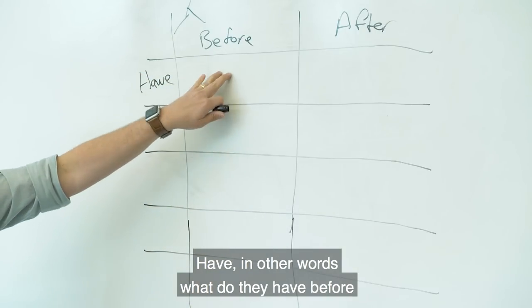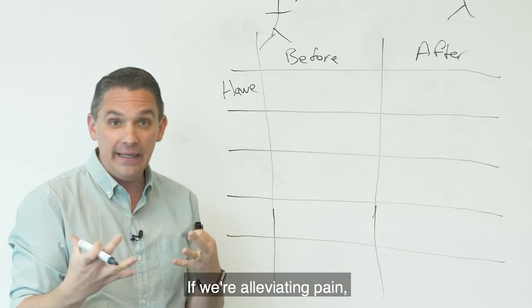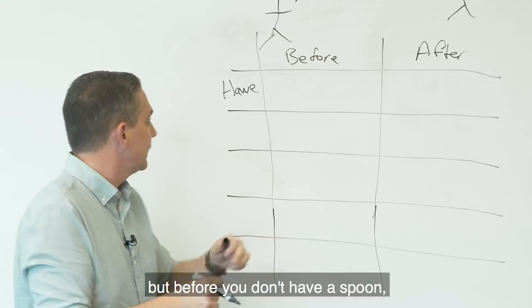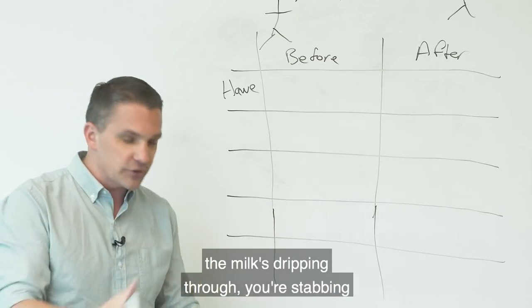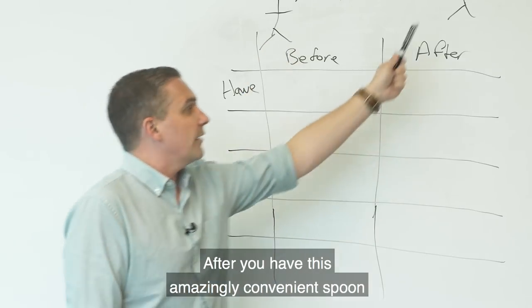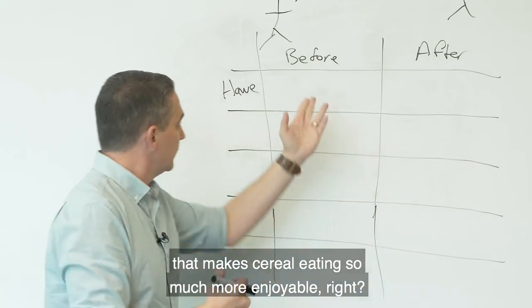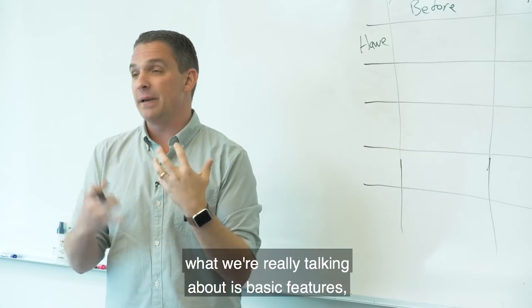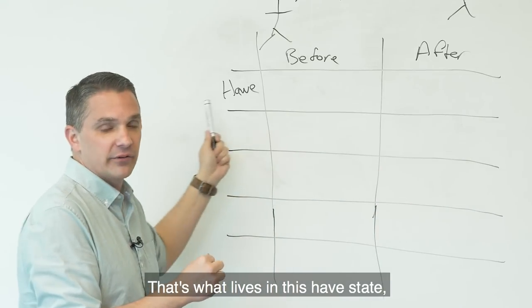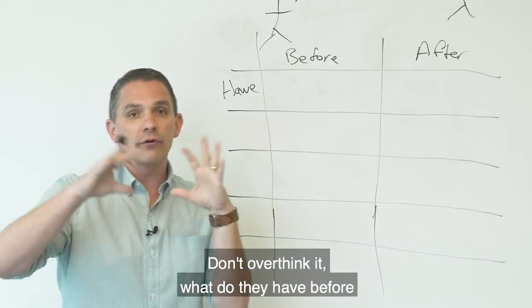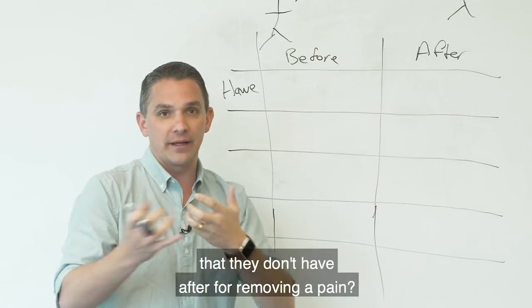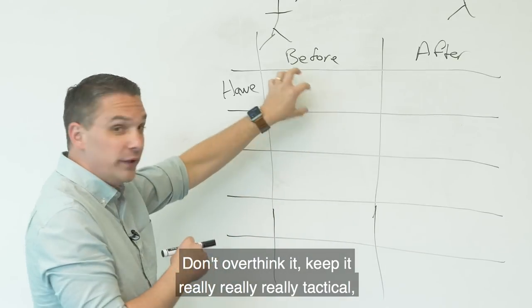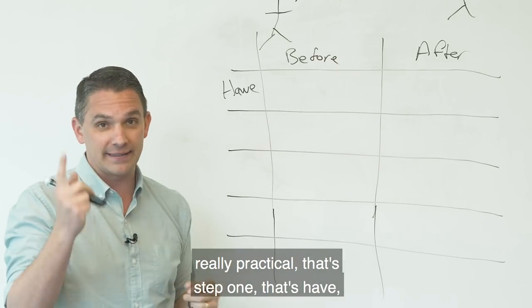So the first way that we can articulate this shift is through what we call have. In other words, what do they have before that they don't have after? If we're alleviating pain. Or what don't they have before that they now have after? So if you're selling widgets, I'm selling a spoon to somebody who loves cereal. Before you don't have a spoon, you're trying to eat cereal with a fork. The milk's dripping through. You're stabbing yourself in the cheek. Life is generally miserable. After you have this amazingly convenient spoon that makes cereal eating so much more enjoyable. Before, no spoon. After, spoon. It's as simple as that. When we think about have, what we're really talking about is basic features, features and benefits. That's what lives in this have state. That's the features and benefits. Don't overthink it. Keep it really tactical, really practical. That's step one. That's have. That's how we articulate the have.